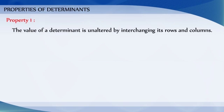Properties of determinants. Property 1: The value of the determinant remains unchanged if its rows and columns are interchanged.